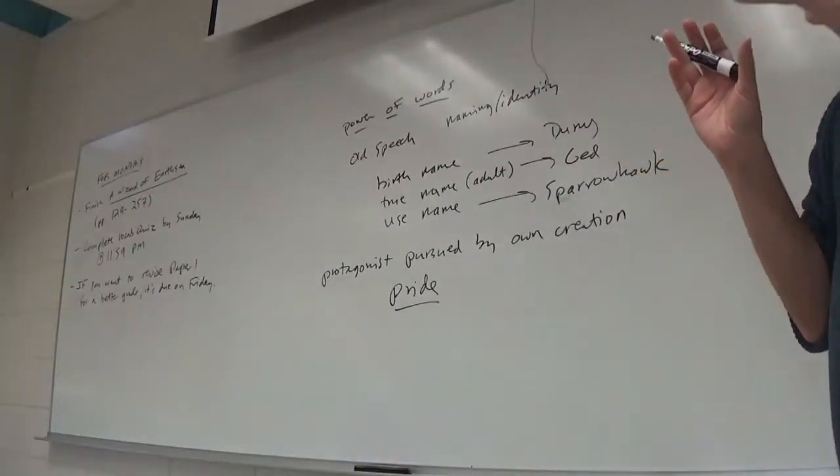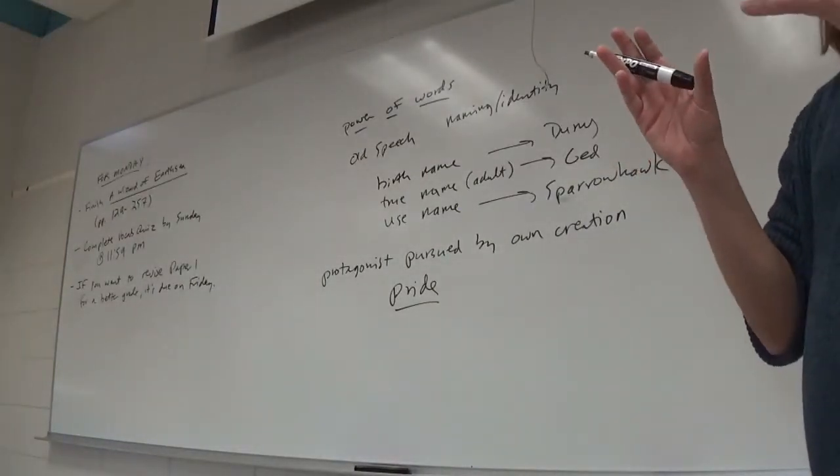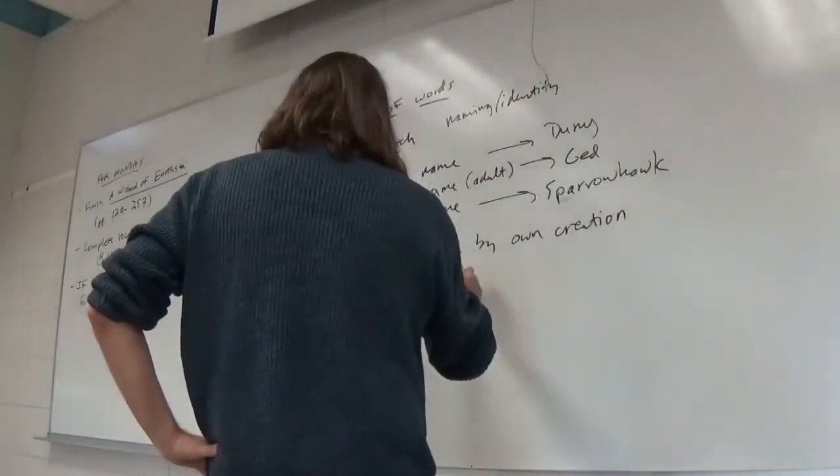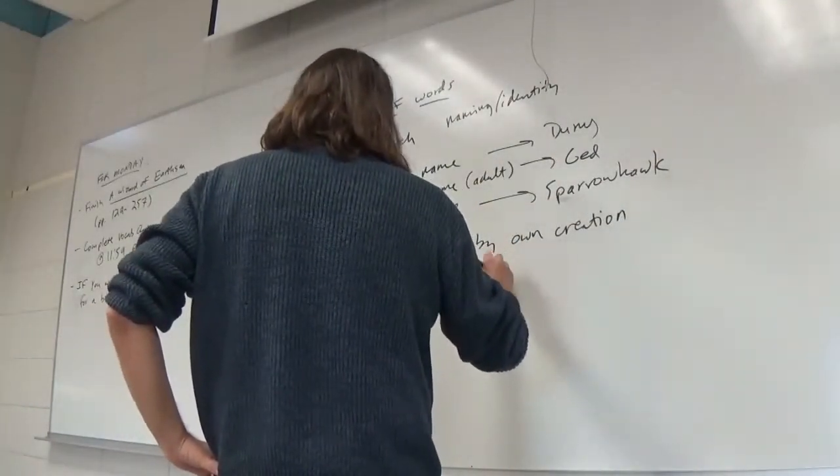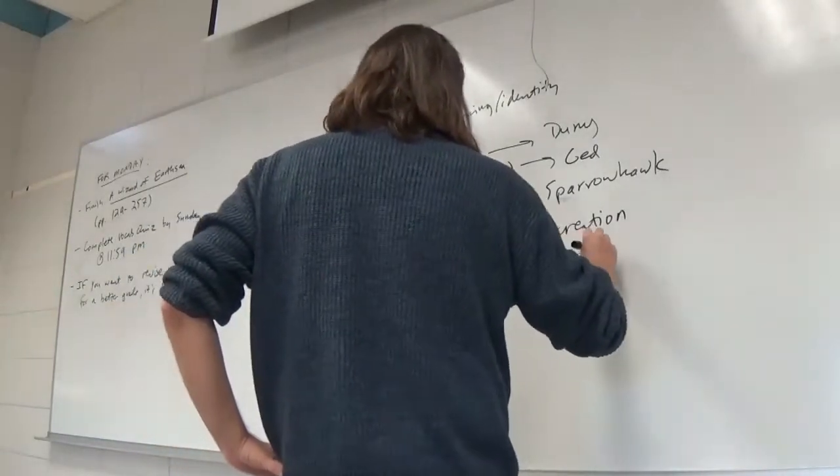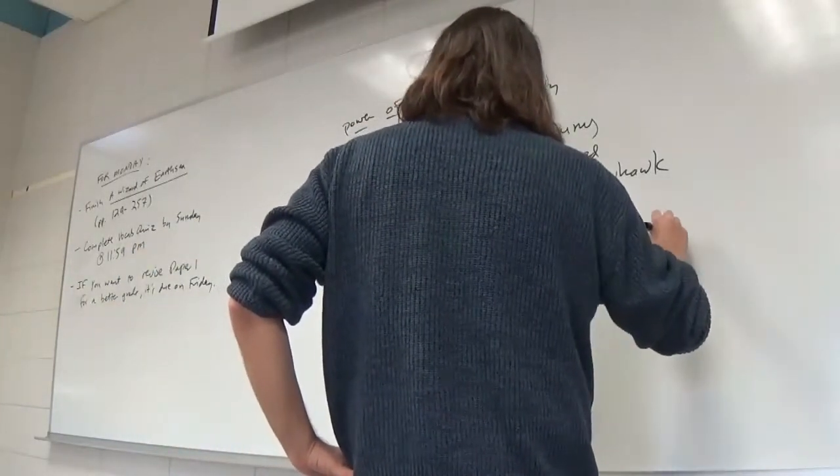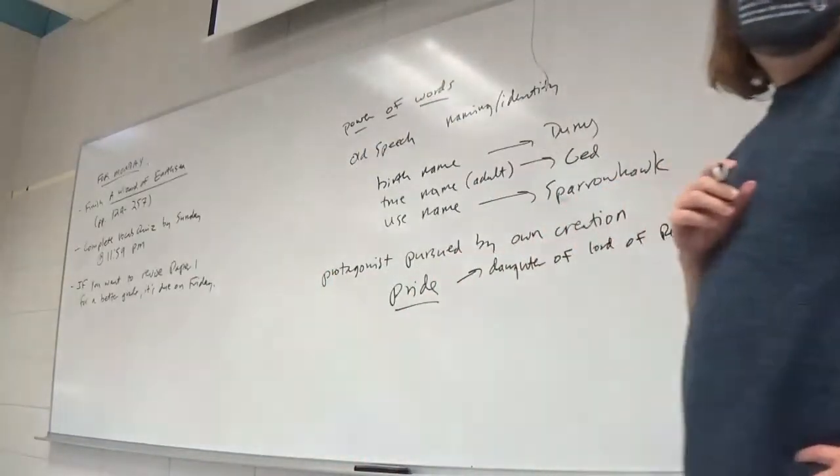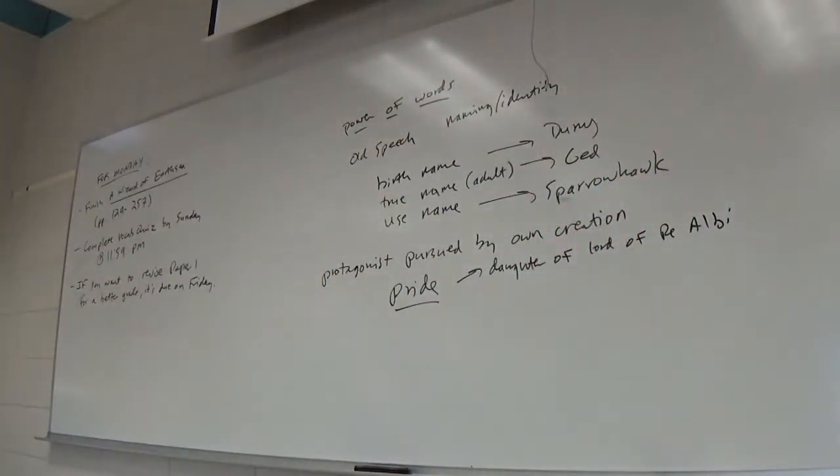But again, in both cases where the shadow kind of gets called forth, right, like, he is showing off, right? First, right, he's showing off for that girl, right, for the daughter of the Lord of Re'albi. He's like, yeah, of course I can call up a spirit, right? Of course I can do all these things. Why would you think I couldn't?